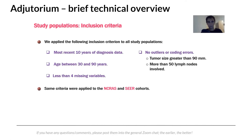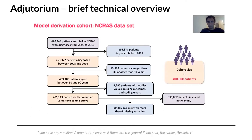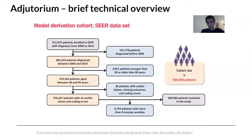All patients were between 30 and 90 years of age. Records with outlier values for tumor size, lymph nodes, or excessive missingness in prognostic factors were removed. After applying inclusion criteria, the UK dataset yielded 400,000 patients, and approximately 369,584 patients were included from the US dataset.